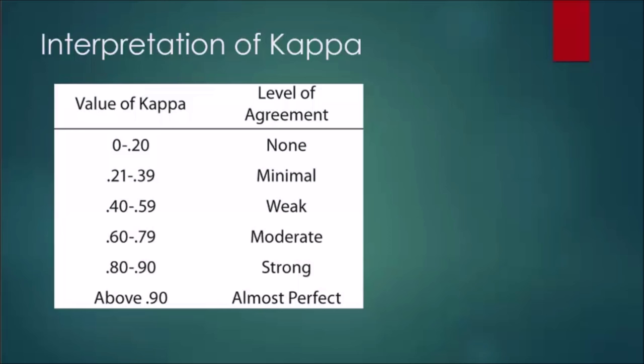Moving on to the intraclass correlation coefficient calculation example. We have three sets of data: Rater 1 for BRG trial 1, Rater 2 for BRG trial 1, and Rater 1 for BRG trial 2. The first two are inter-rater reliability, because it's two different raters. The first and the third are intra-rater reliability, because it's the same rater rating someone twice.